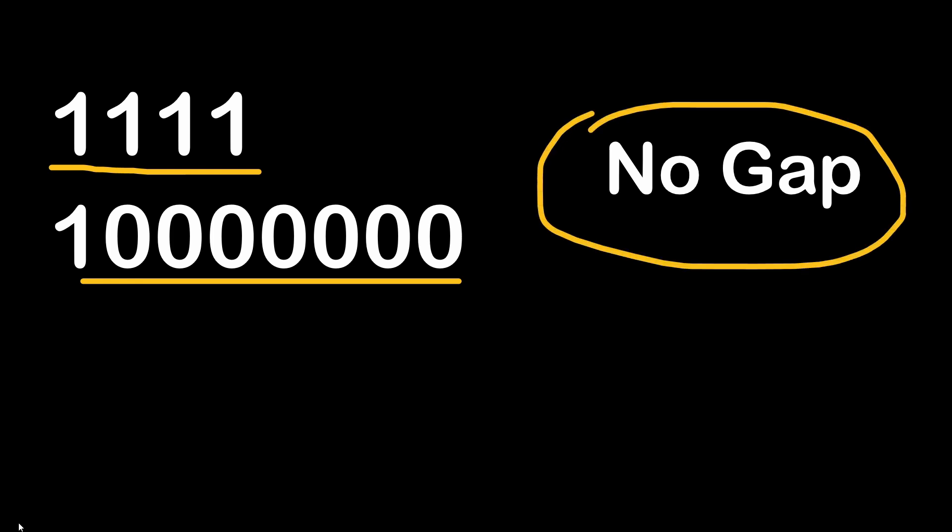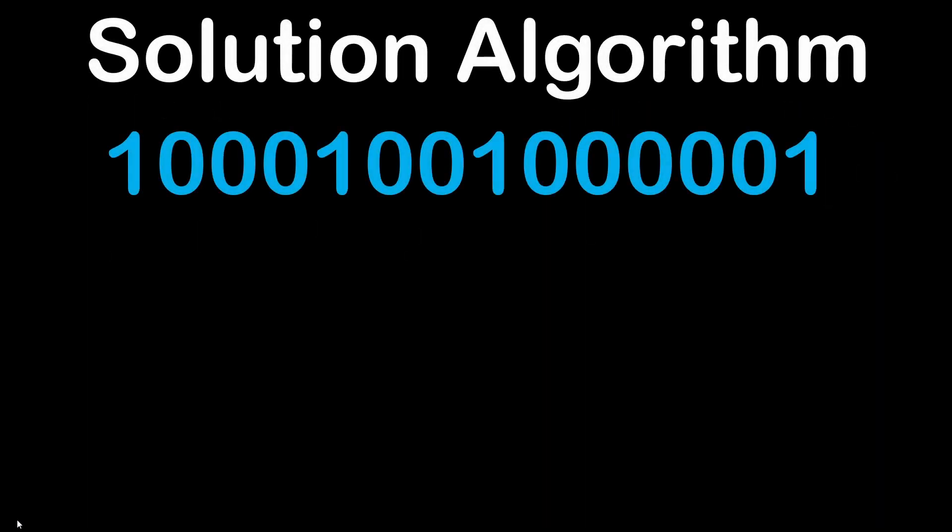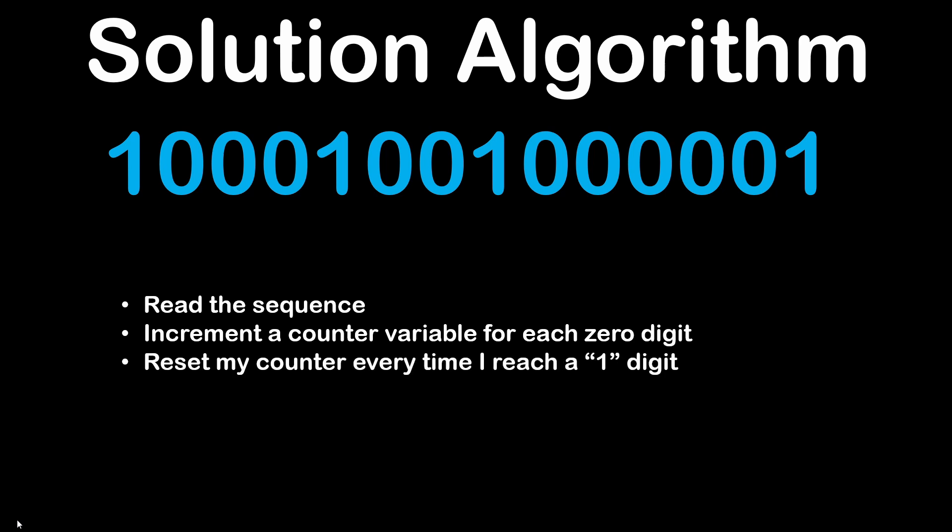Now taking all of this into account, the solution is the following. Let's consider this first number. First we read the sequence of digits from left to right. And then we will increment a variable as a counter every time we read a zero digit. Then if we reach a one digit, we reset our zero counter. Here in our example, we are resetting the counter four times. But the first time has no effect here because at the start of my sequence reading, the counter is zero anyway.